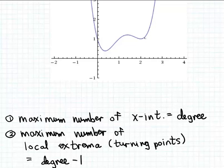This polynomial function doesn't appear to have any x-intercepts, so this first fact is not going to help us determine what the minimum degree could be. But it does have some local extrema—it appears to have one, two, three turning points.